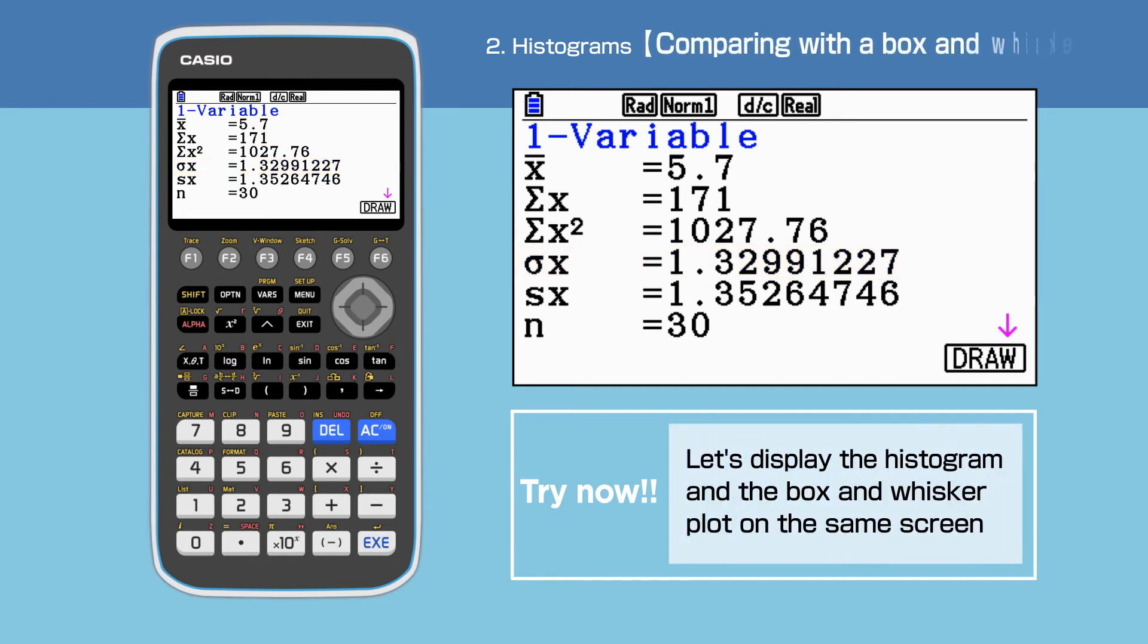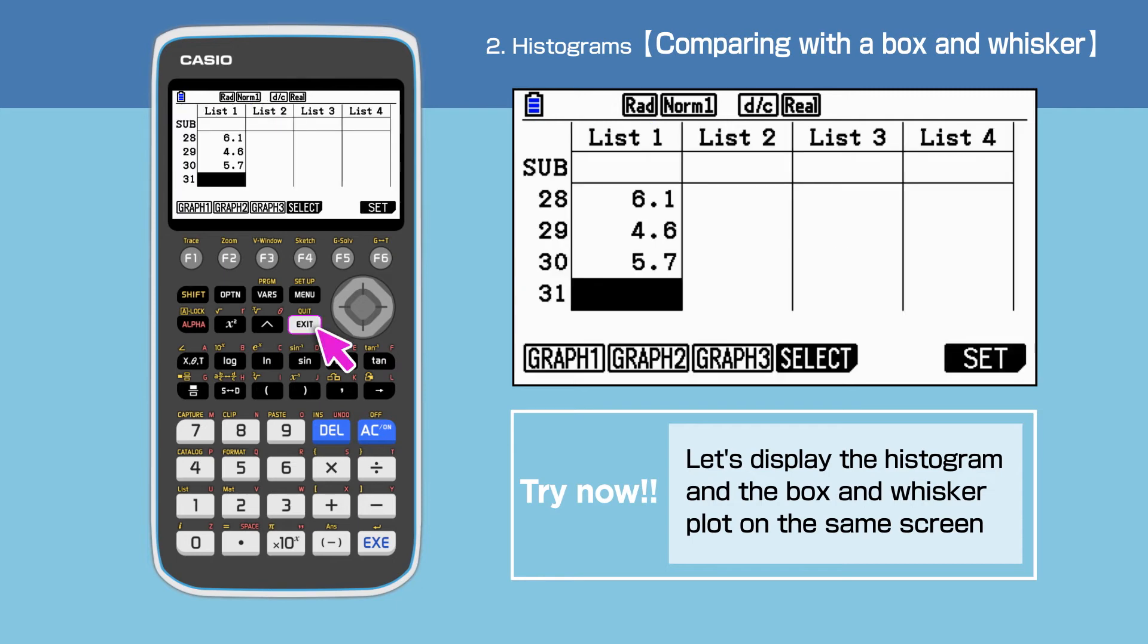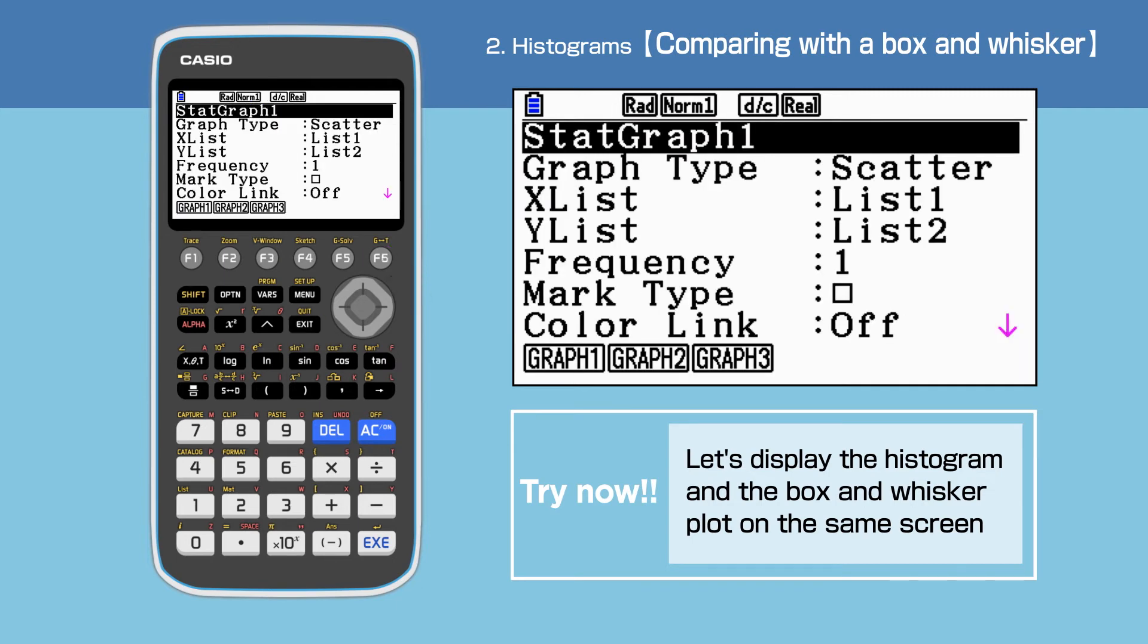Next, we will display the histogram and the box and whisker plot on the same screen. Press exit, then F6 to open graph setting. We set up the data for the box and whisker plot in start graph 1.